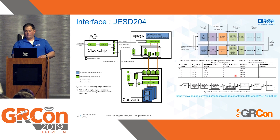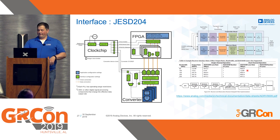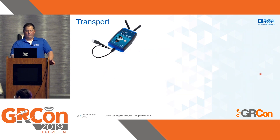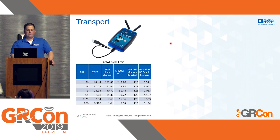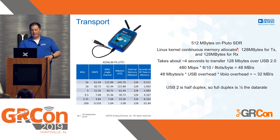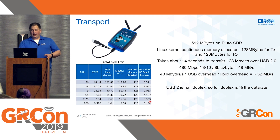Some of these run at 9 or 12 gigabits per second just to transfer data from the transceiver chip to the FPGA. Then there's the transport layer — USB2, USB3, PCIe, or Ethernet — to the host. On the PlutoSDR, transport is USB2. Pluto has 128 MB of internal memory for buffering, which is anywhere between half a second and 61 seconds of data depending on sample rate. It takes about 4 seconds to transfer 128 MB across USB.